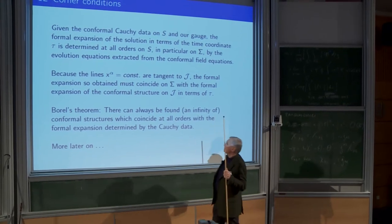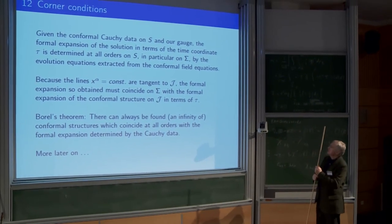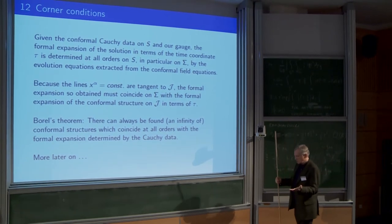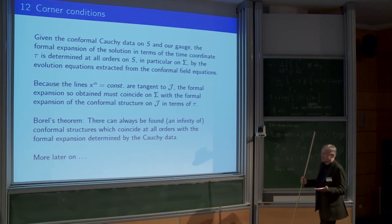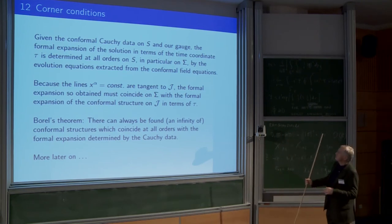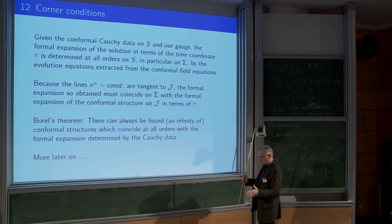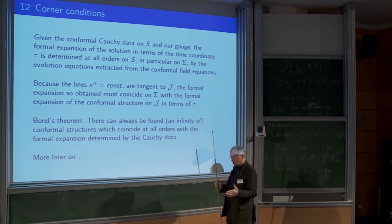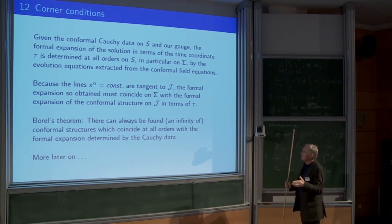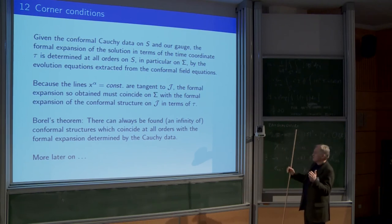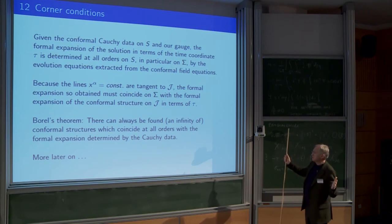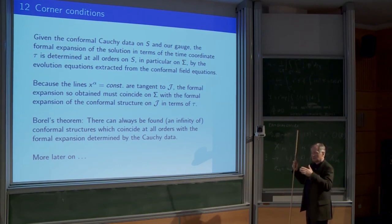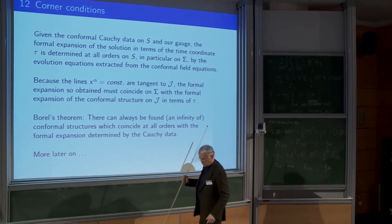Corner conditions: from Cauchy data you can calculate the solution to any order, and the formal expansion is determined uniquely by the gauge. From boundary data you also have a formal expansion, and you must ensure these coincide. Borel's theorem says this can always be done and there are many boundary data you can prescribe so that this is satisfied.